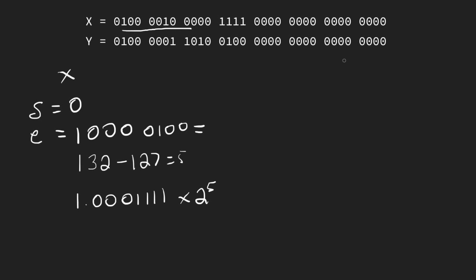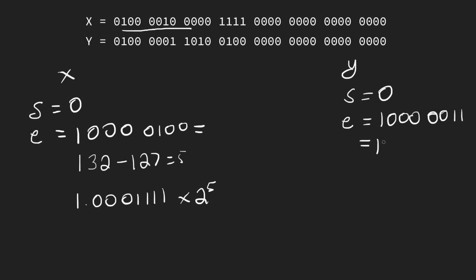Now let's go ahead and do y. We find that y's sign bit is also zero, and our exponent field is 10000011, which we find is equal to 131. If we subtract out 127, we get four as our actual exponent value.